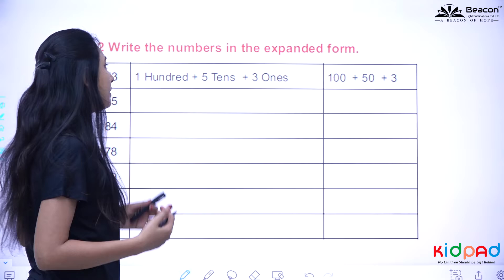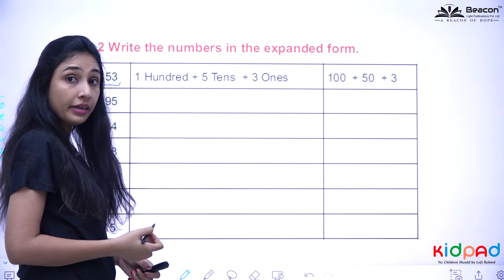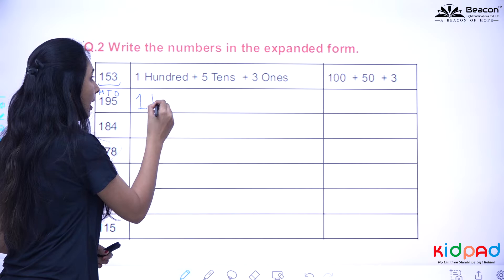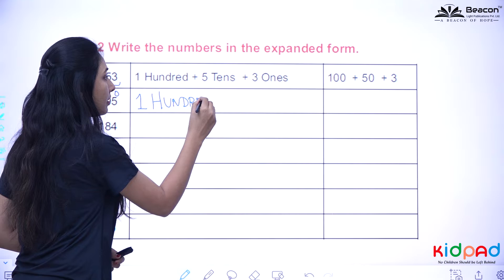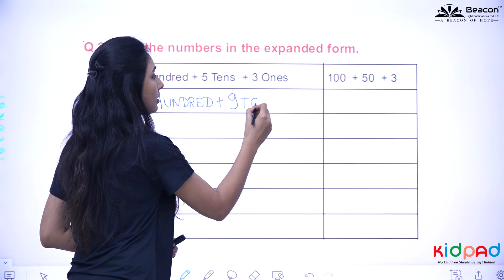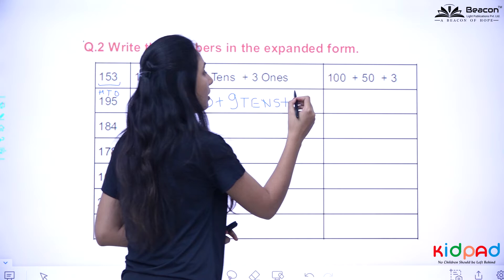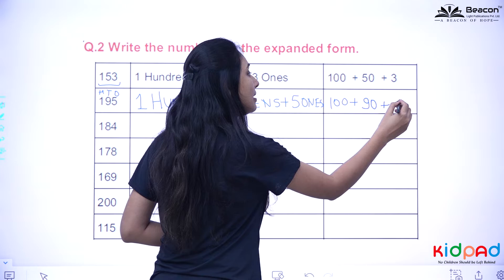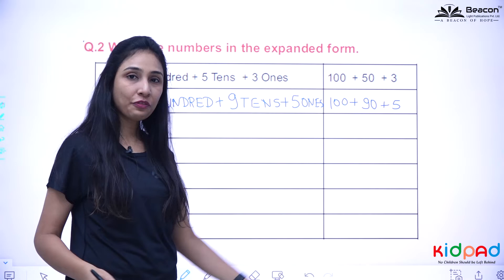Next, write the numbers in expanded form. Now we have to write the standard form in expanded form. The first number is given, 153. That is one hundred plus five tens plus three ones. The second number, ones, tens, and hundreds. So we are having one hundred plus nine tens plus five ones. We will be getting one hundred plus ninety plus five.